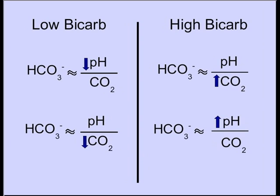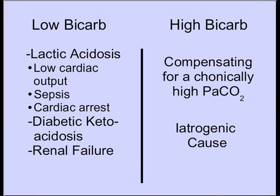There are two ways to get a low bicarb: a low pH with a normal CO2, or a low CO2 with a normal pH — the machine will calculate a low bicarb. To get a high bicarb, you only need a high CO2 with a normal pH, or a high pH with a normal CO2. In any of these ways, you can get derangements of bicarb beyond the normal 22 to 26 milliequivalents.